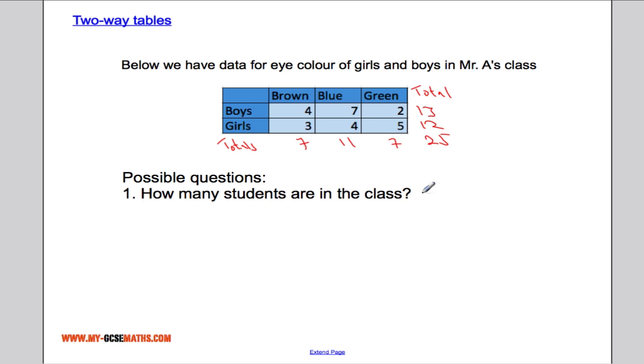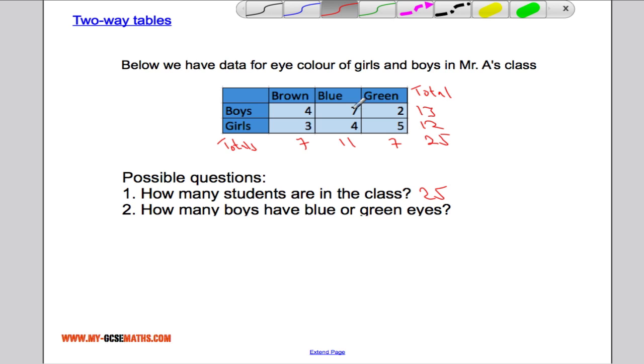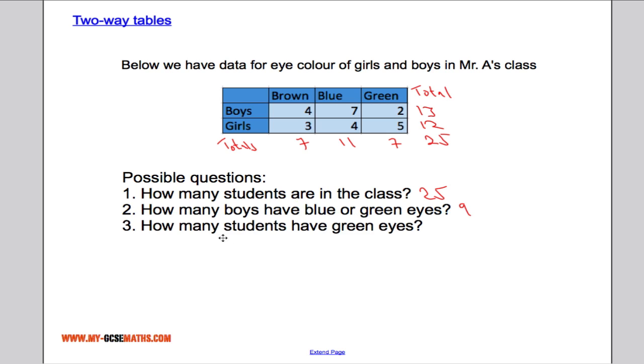So there are 25 students in the class. What else could we be asked? How many boys have blue or green eyes? Well, seven and two is nine. What else could we be asked? Maybe how many students have green eyes? Well, I'm glad we've already worked that out. There are seven students in total that have green eyes.